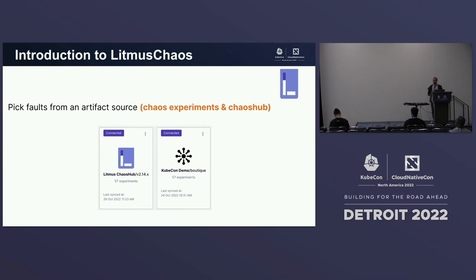In the Litmus control plane, you'll find chaos artifact sources embedded — we call them the Chaos Hub. The Chaos Hub is an open marketplace of chaos experiments where the community pushes experiments. You can pull those experiments, construct complex scenarios using them, and once you've created something worth sharing, push that scenario back into the Chaos Hub.